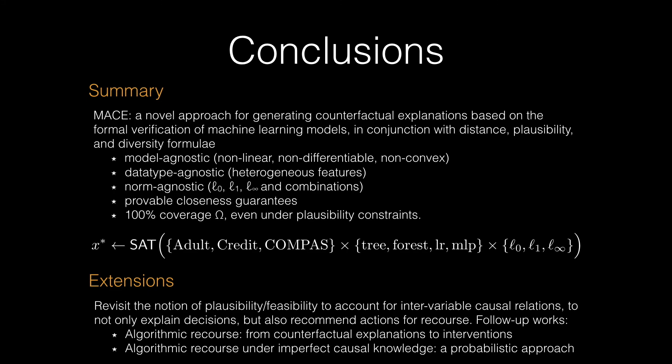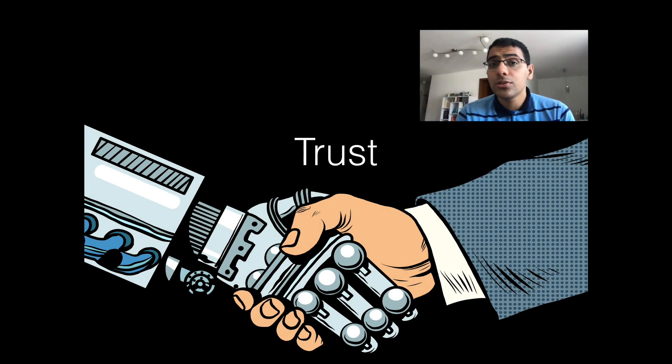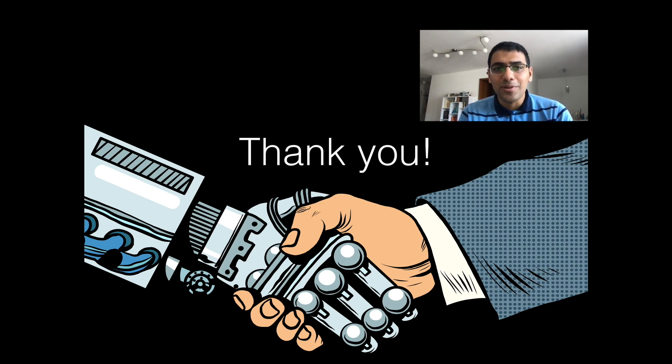For this, we would need an understanding of the causal structure and relation between variables that govern the world. For the interested reader, we recommend reading our follow-up work on these topics. Ultimately, the adoption of machine learning models relies on the trust developed between humans and machines, and interpretable machine learning and counterfactual explanations are one step towards that. Thank you very much.